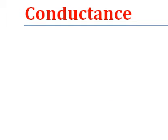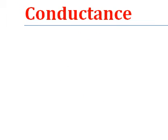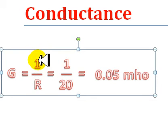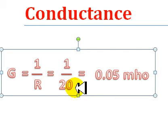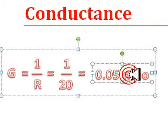Let's give an example. A circuit having a resistance of 20 ohms has a conductance of 0.05 mho. Let's calculate that now. Conductance equals 1 divided by R, the resistance — it is just the reciprocal of R. We said 20 ohms, so 1 divided by 20 gives you 0.05 mho. That's very important — use the unit mho because we're calculating conductance.